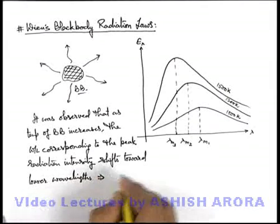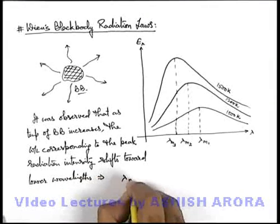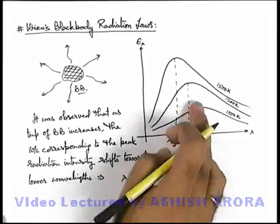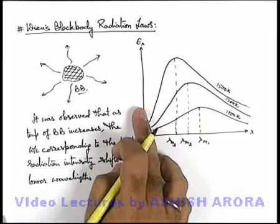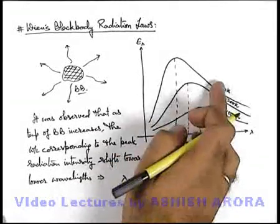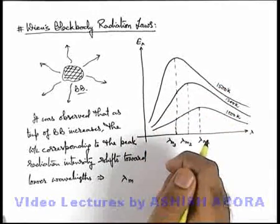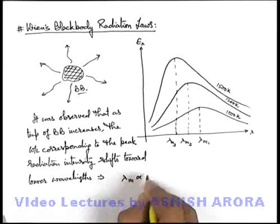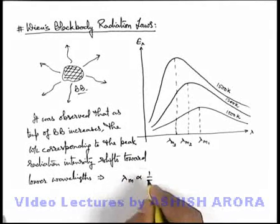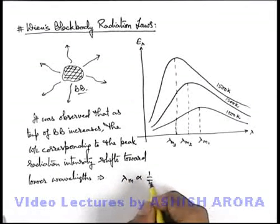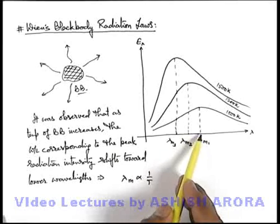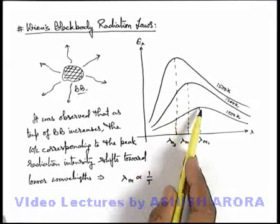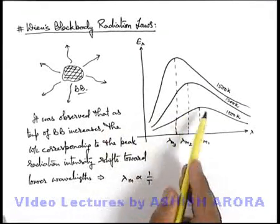And this implies that the wavelength corresponding to peak radiation intensity is decreasing with rise in temperature. And mathematically it was analyzed by Wien that this lambda m is inversely proportional to T. There was an inverse proportionality relation between the wavelength corresponding to peak emission of energy from a black body and its temperature.